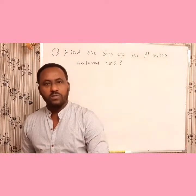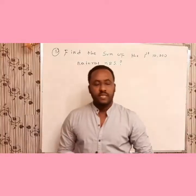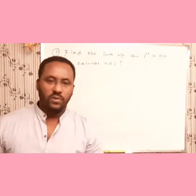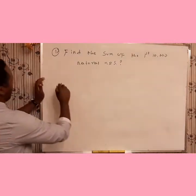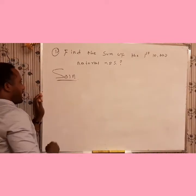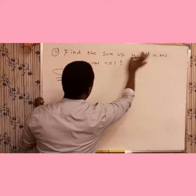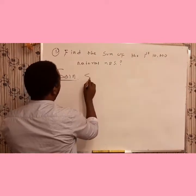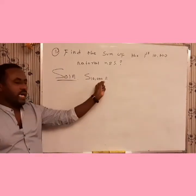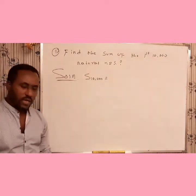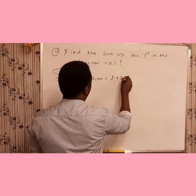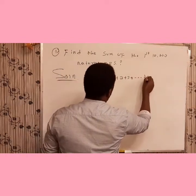Let's see how we are going to find the sum of these. Now the solution: we can represent this question by S_10000. S_10000 means this is the sum of the first 10,000 natural numbers, which is given by 1 + 2 + 3 + ... + 10,000.